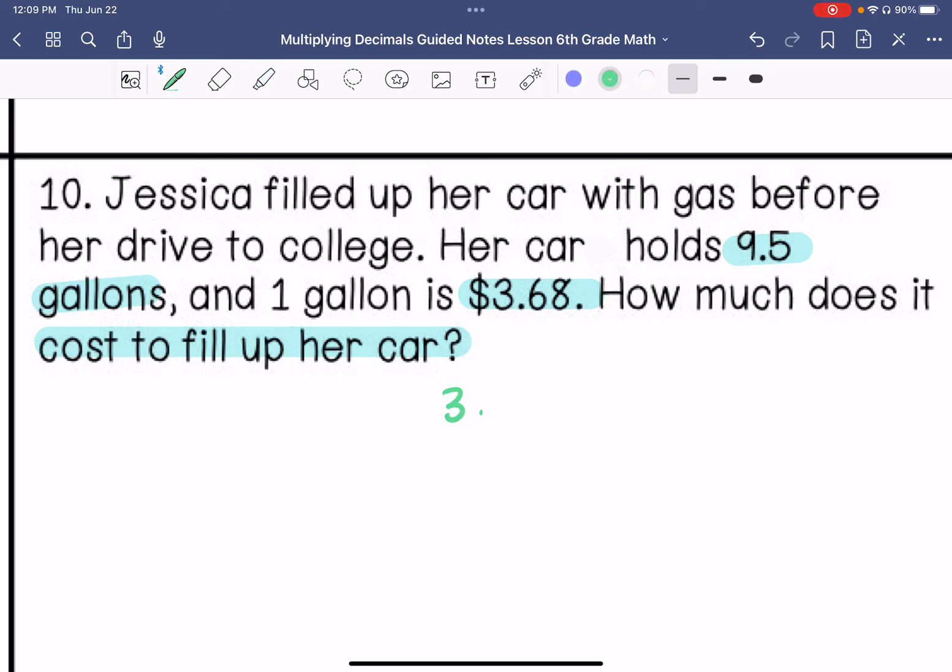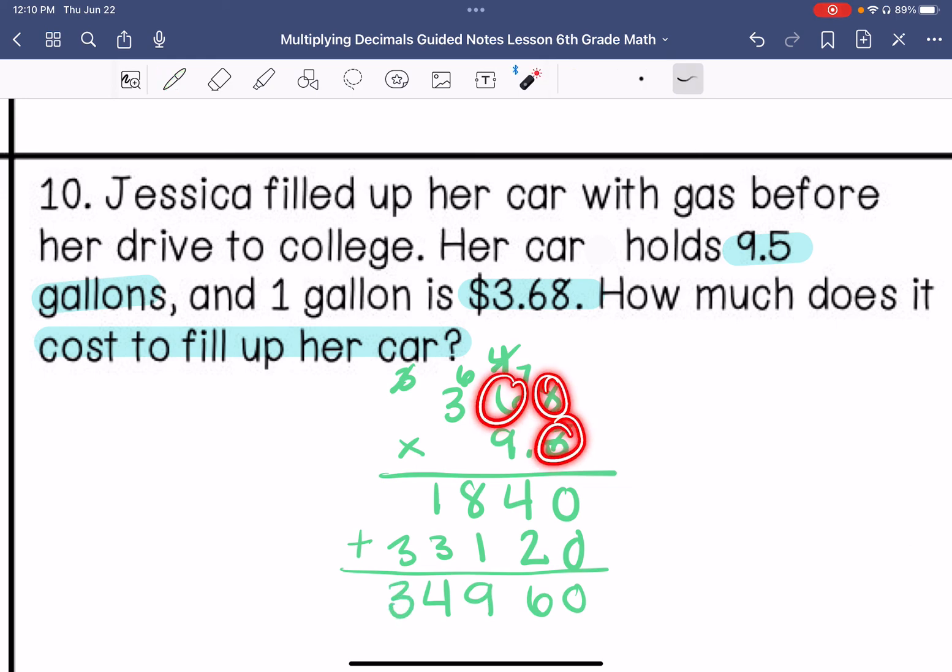So we are going to do $3.68 times that 9.5 gallons her car holds. 8 times 5 is 40. 5 times 6 is 30. Plus that 4 is 34. 5 times 3 is 15. Plus that 3 is 18. 9 times 8 is 72. 9 times 6 is 54. Plus that 7 is 61. 9 times 3 is 27. Plus that 6 is 33. And then we have 1, 2, 3 behind the decimal point. 1, 2, 3. So $34.96.